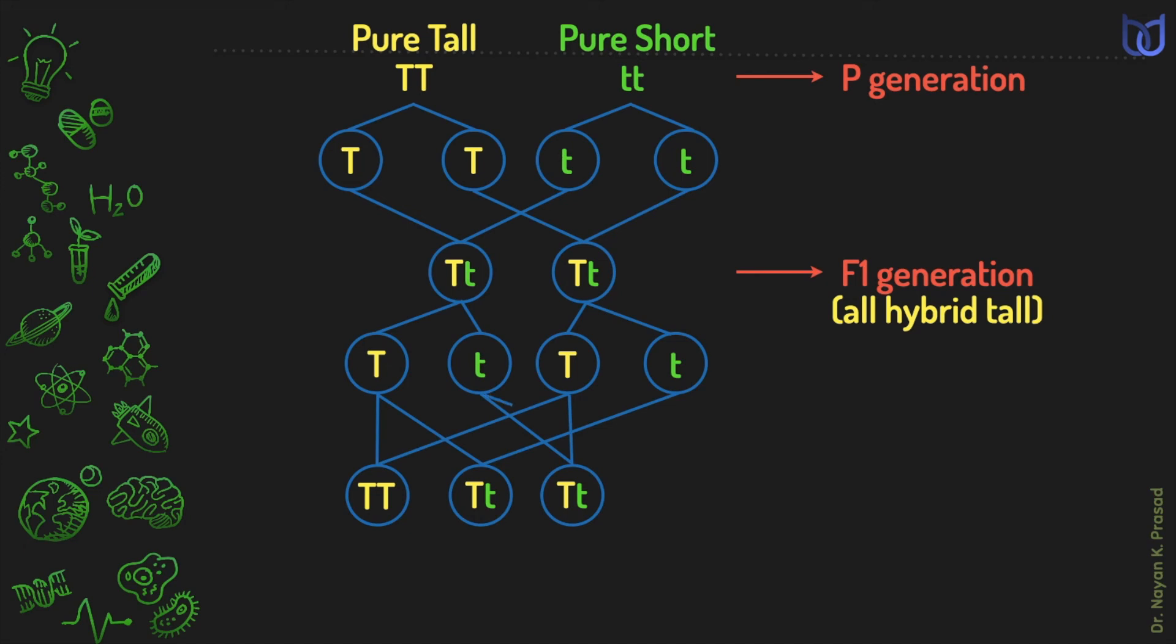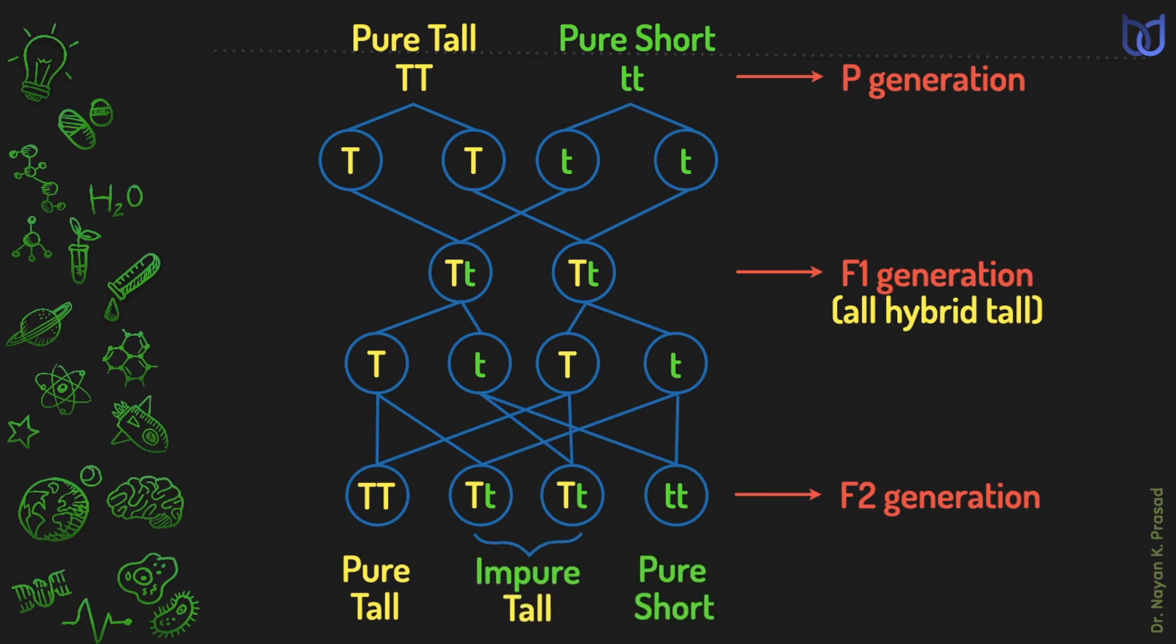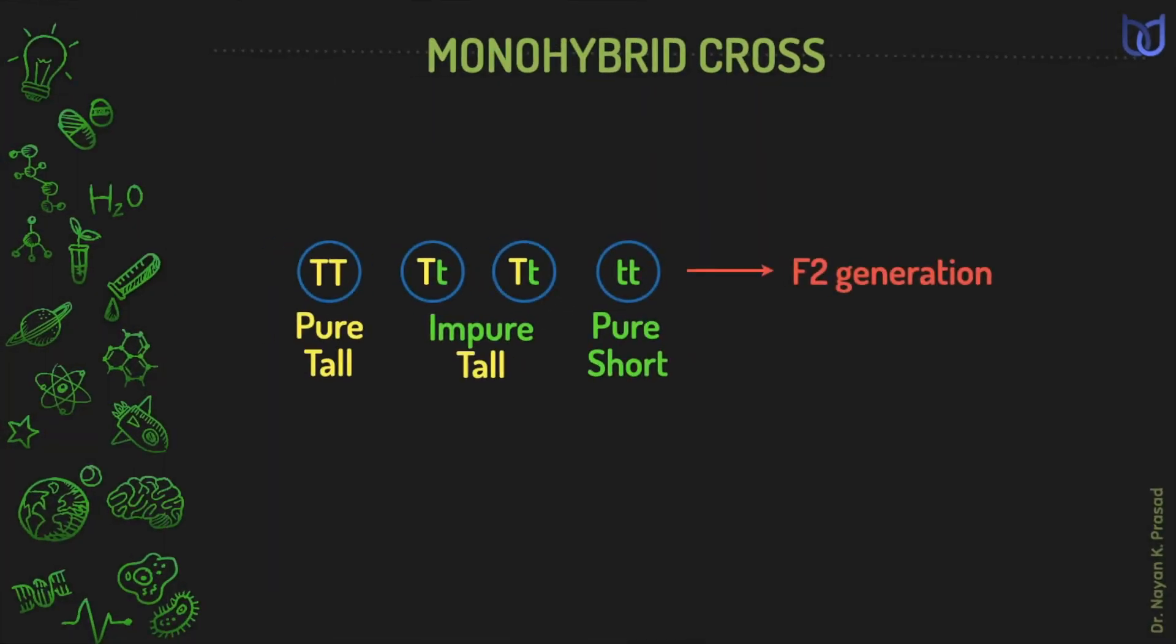When small t and small t combine, then this will result into a pure short plant. Thus, in second filial generation, the individuals may be pure tall, impure tall, or pure short. So, altogether, three tall and one short.